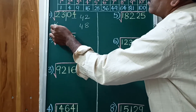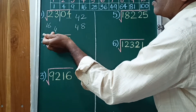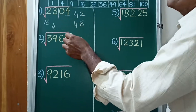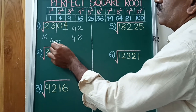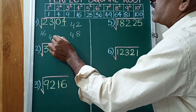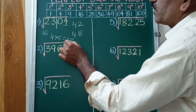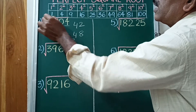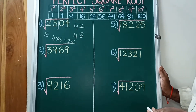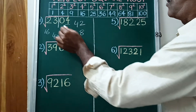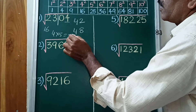We have 23 and 16, giving us 4. The next number is 5, and 4 times 5 equals 20. Compare 23 to 20 — 23 is greater than 20.